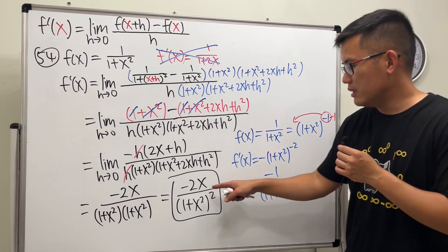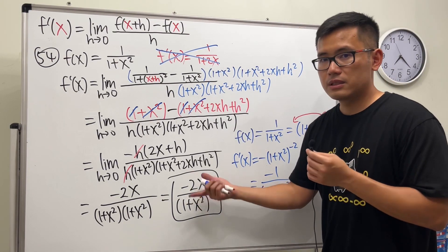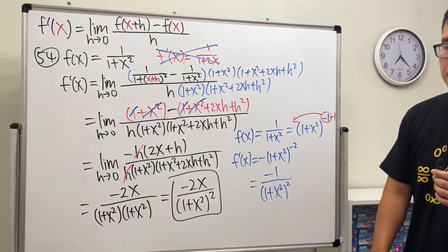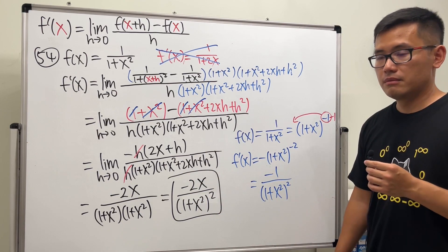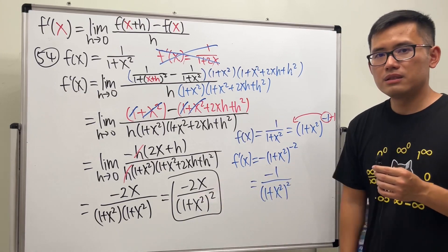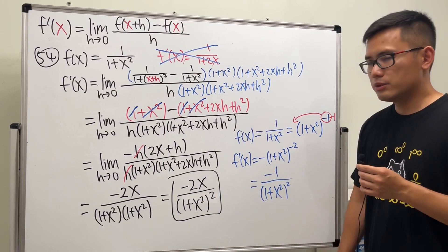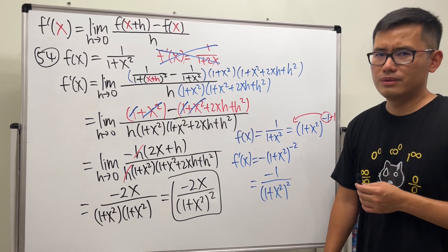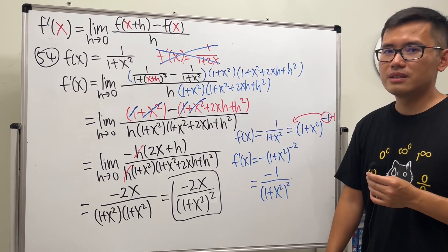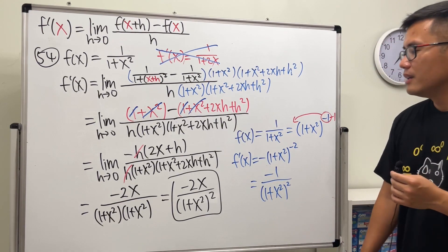Earlier we have negative 2x. What's the deal? Is that wrong? It must be wrong. The easy way is always right, huh? No, the definition is much better. So here's the deal.